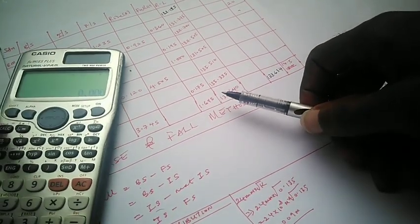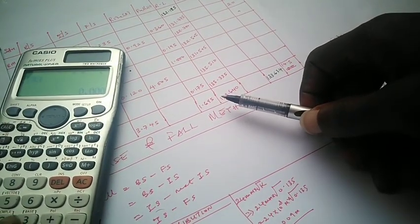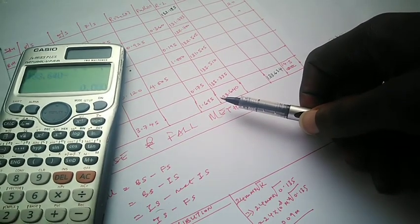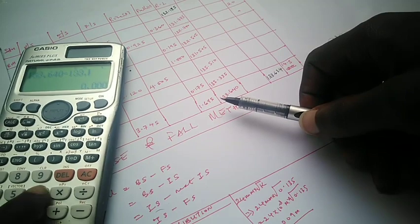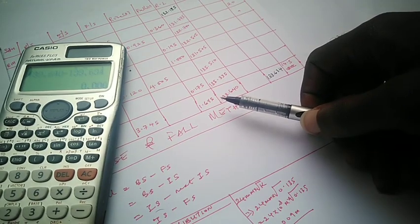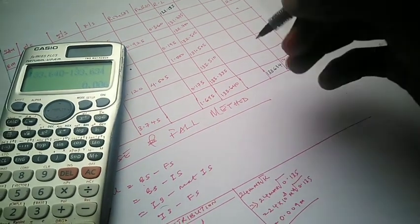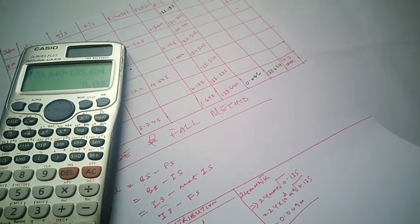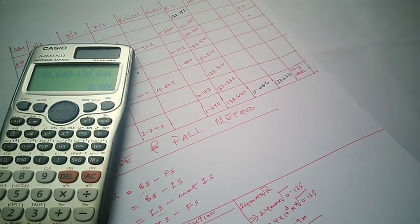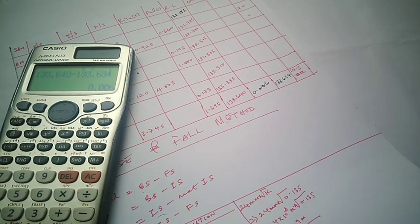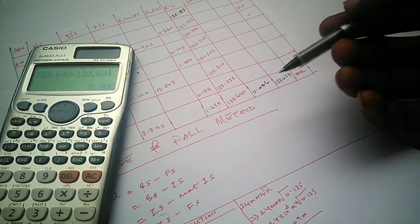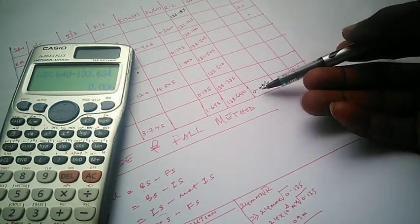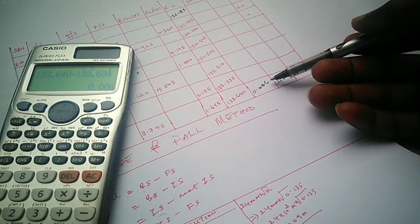We are going to find the difference. The difference is 133.640 minus 133.634, so we have the difference to be 0.006. That's actually the difference. The first thing we did was compute the difference and we found out it's 0.006.